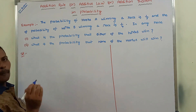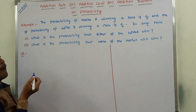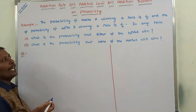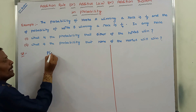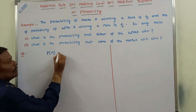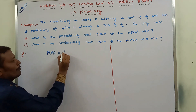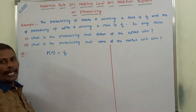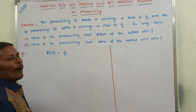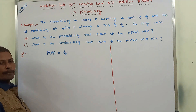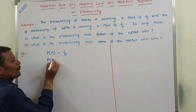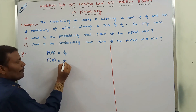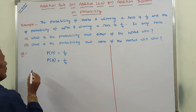First of all, the probability of horse A winning a race is denoted by P(A), which is equal to 1/5. Next, the probability of horse B winning a race is denoted by P(B), which is equal to 1/4.